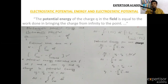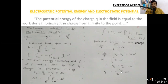The total change in potential energy gives us that V equals electric field times distance. The potential energy varies with distance as dr. Electrostatic potential energy and electrostatic potential are two related names — energy is equal to work done.